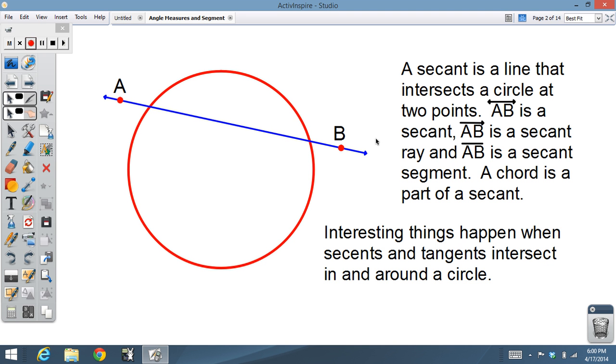So let's get started. A secant is a line that intersects a circle at two points. So line AB, that's a secant. And also we recognize the parts that make up what we call the ray from A to B and on beyond, that's a secant ray. The segment between A and B, that's a secant segment. And then also remember a chord was something that had endpoints, a line segment that had endpoints on the circle. So a chord is always a part of a secant.